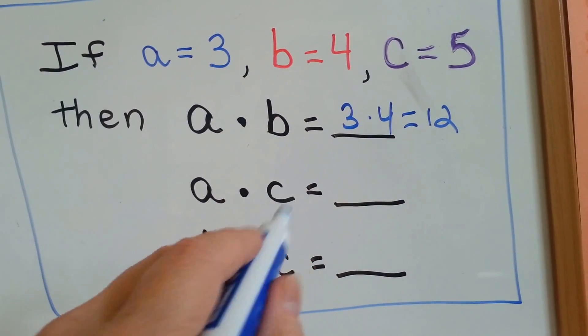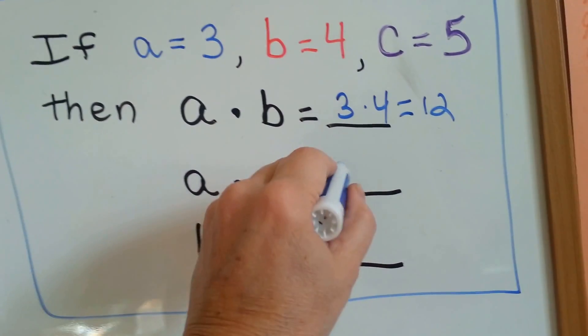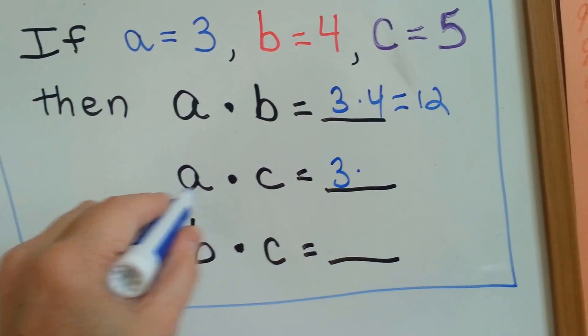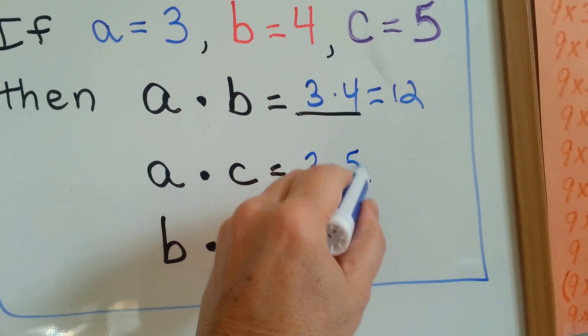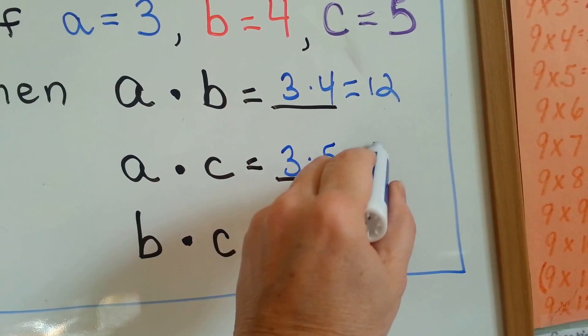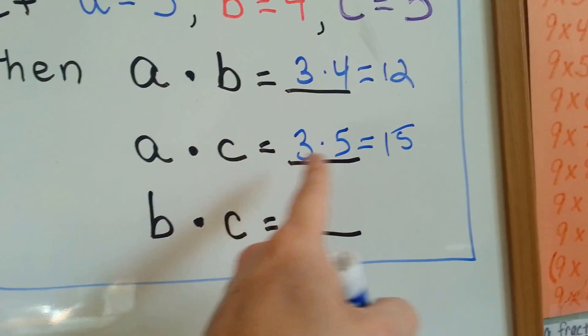What about a times c? Well, a is 3. Put our times dot. c is 5. So we have 3 times 5. 3 times 5 equals 15. See how I did that?